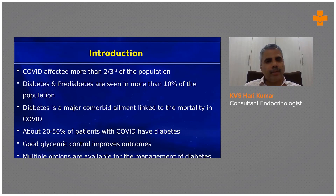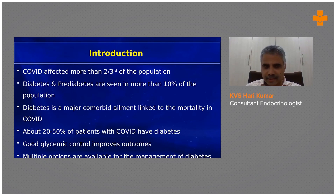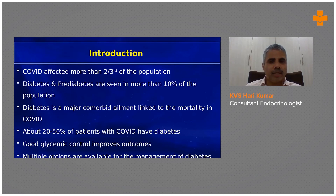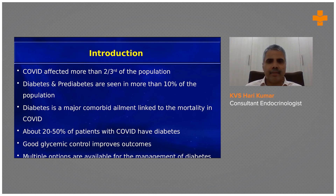COVID affected more than two-thirds of the Indian population. This data comes from serosurvey studies — while absolute numbers may look small, population surveys show that 60 to 70 percent of those surveyed have antibodies, meaning COVID has affected a very large portion of the population.